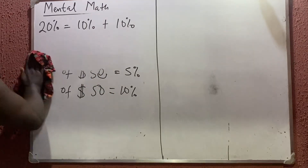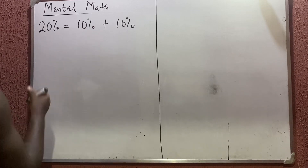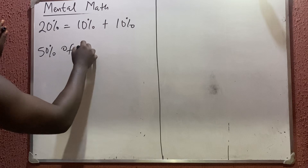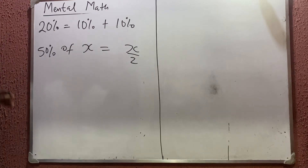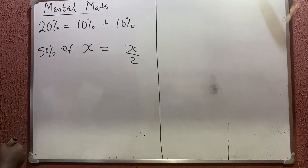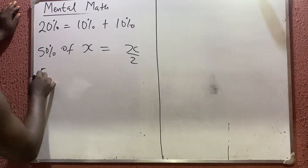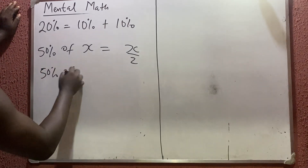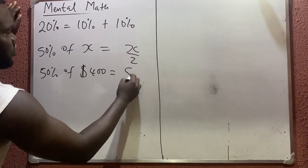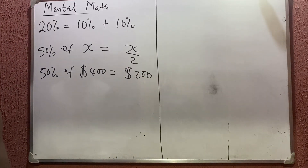For 30 percent, that means 10 percent multiplied by three; 40 percent means multiplied by four, and so on. Another easy one is 50 percent — 50 percent of anything means just divide that number by two. So 50 percent of 400 dollars simply means divide 400 by two, which is 200 dollars.